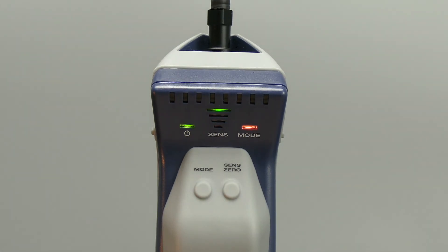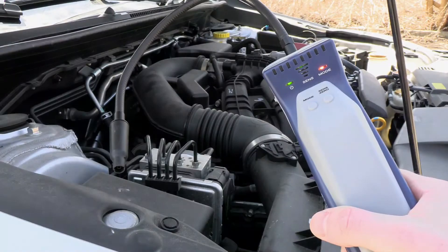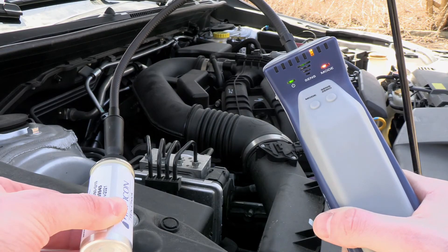In pinpoint mode AST 200 IR will automatically zero to the refrigerant background after alarming for a short time allowing you to easily locate higher levels of refrigerant.